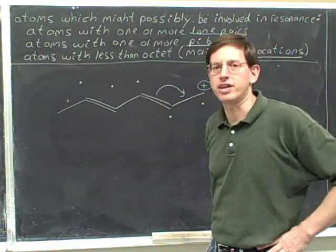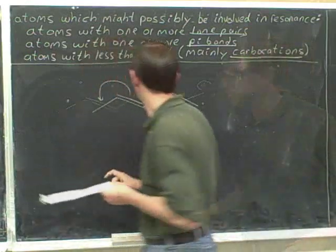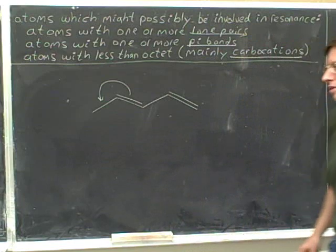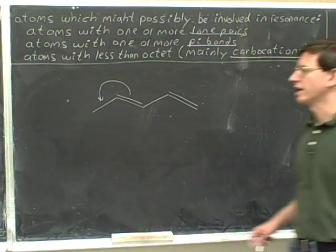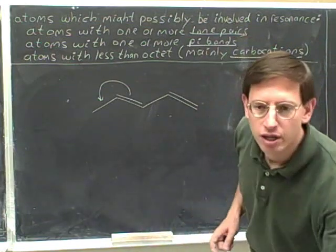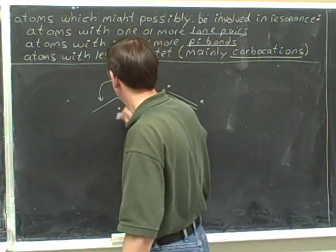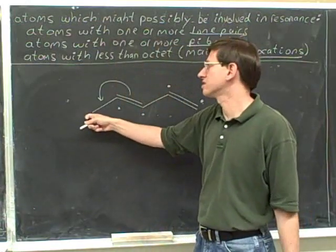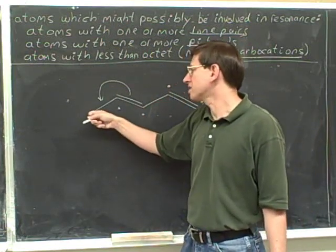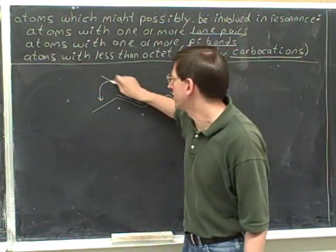Start by putting in dots for all the atoms that can participate in resonance. Now, is this a legal resonance electron-pushing arrow? We don't put a dot here because this atom does not have any of the required characteristics. That means this is not legal, because this atom is at the head of this arrow but it's not supposed to be participating in resonance.